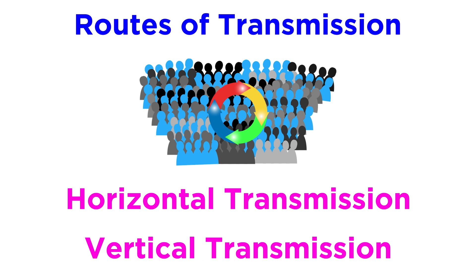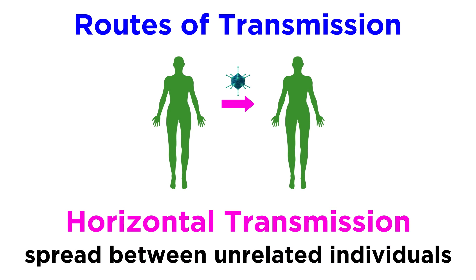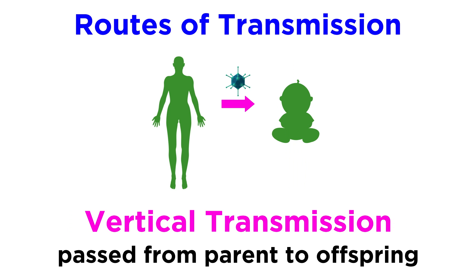Transmission routes within human populations can be broken down further into horizontal versus vertical transmission. Horizontal transmission refers to the spread of a virus from one individual to another non-related individual. Vertical transmission means the virus is passed from parent to offspring, and can occur via the placenta, during birth, or through breast milk.